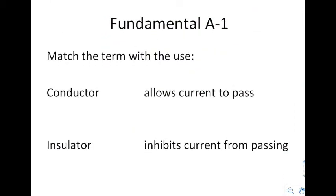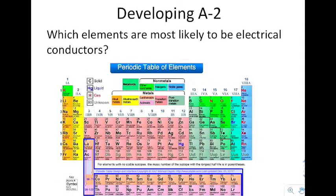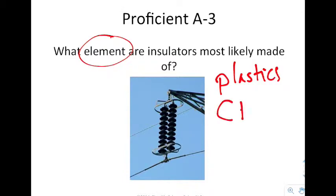Now, it says match the term with the use. A conductor does allow current to pass and an insulator does inhibit current from passing. When we look at this thing right here, we say which elements are most likely to be electrical conductors. They are the ones right in here that we call the D or the transition metals because they have the D orbital. It says what elements are insulators most likely made of? These are things like plastics. I want to talk about elements. If they're made out of plastics, they're generally carbon, hydrogen, oxygen, nitrogen, those sorts of things. In other words, non-metals.